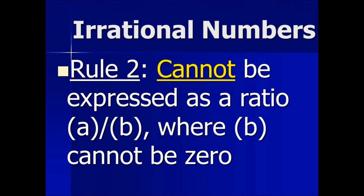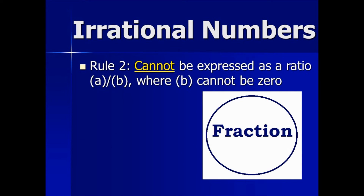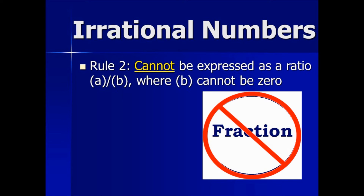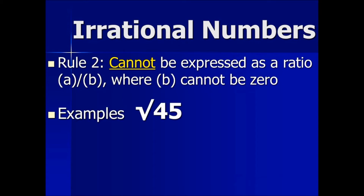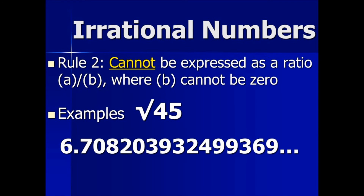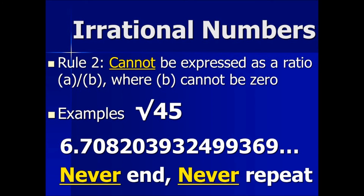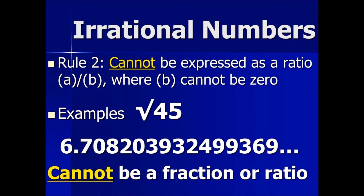This leads into rule number two. Irrational numbers cannot be expressed as a ratio A over B, where B cannot be zero. This means that an irrational number cannot be made into a fraction. To expand on this explanation, we evaluate the square root of 45 to get the number 6.708203932499369 and it continues. This number, by definition, never ends and never repeats. In order for a number to be expressed as a fraction or a ratio, it has to either repeat or end in decimal form.